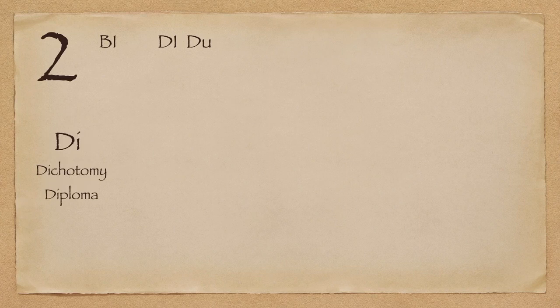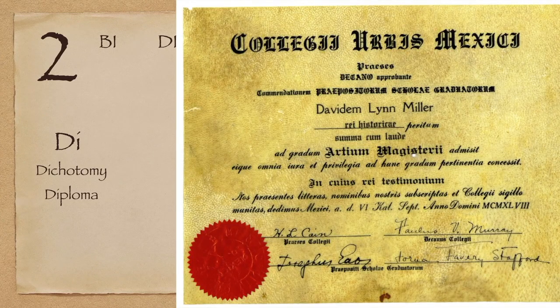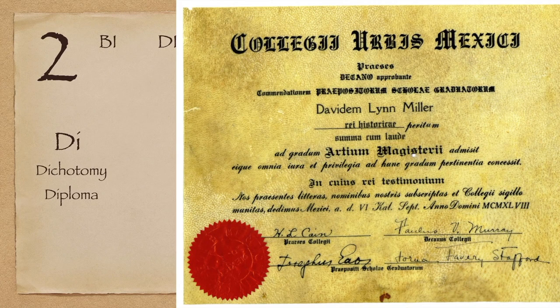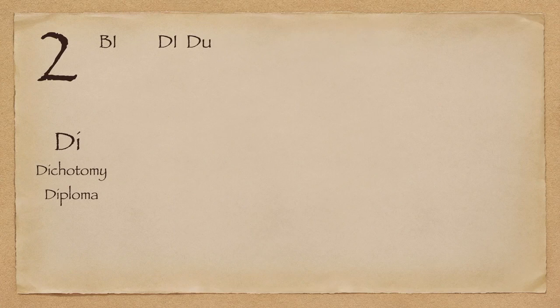Next up is diploma — a certificate awarded by an educational institute to show that someone has successfully completed a course of study. Di is two and diploma means a folded paper, the folding being the sense of doubling. When you fold a paper you double it. This comes from 300–400 years back when universities were forming — a certificate would be provided on paper, folded so it could be carried or put into an envelope. That sense carried over into the idea of a certificate, so a diploma is essentially a folded piece of paper or a certificate.